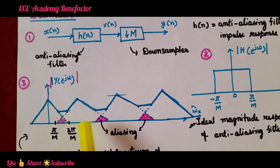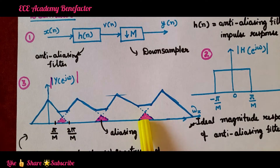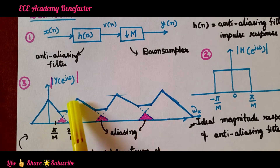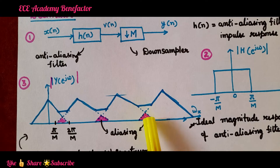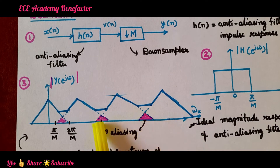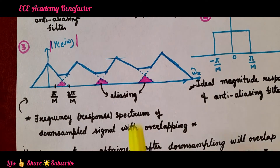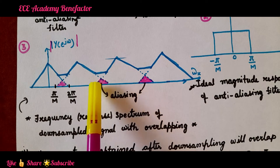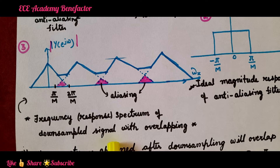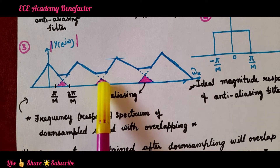Before down sampling, we pass the signal through an anti-aliasing filter. If you see the spectrum of the down sampled signal, some parts are overlapped. This overlapping portion shows that the samples are getting overlapped. To avoid this overlapping of samples is the reason — this overlapping is known as aliasing. This graph shows the frequency spectrum of the down sampled signal with overlapping.